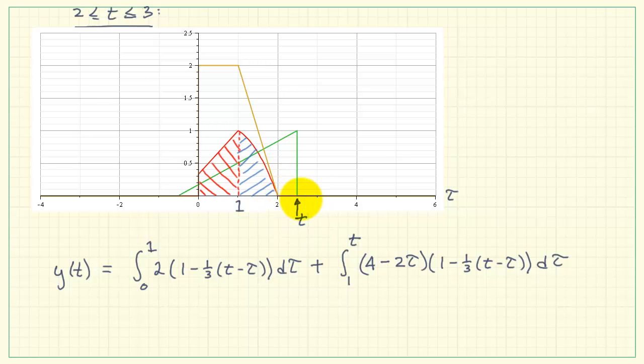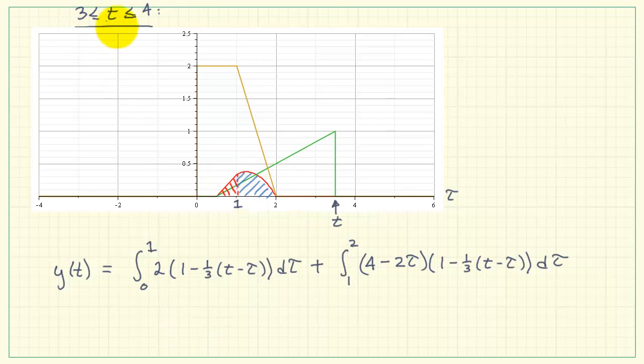Let's now move on to the time step between two and three. That part's the same. Here we're integrating from one to two. Between two and t, the product is zero, so that part doesn't count.